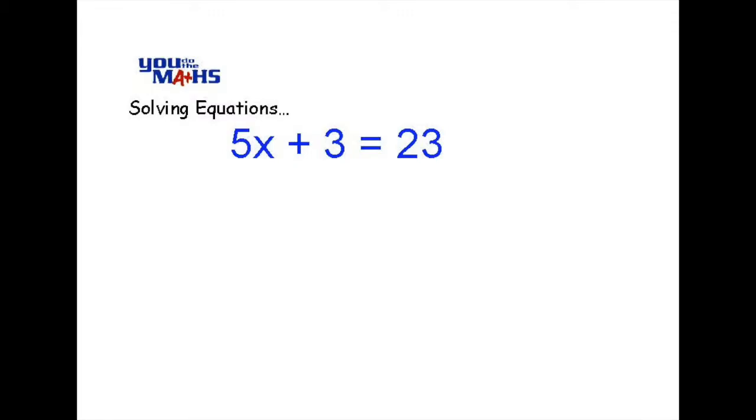When we're asked to solve an equation, that means to find out what the unknown value is. In this case, there's a letter x. We know that 5 is multiplied by x, so 5 multiplied by some number and then 3 added to it has to equal 23.